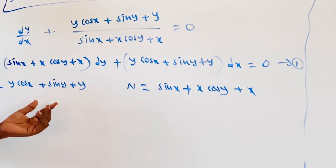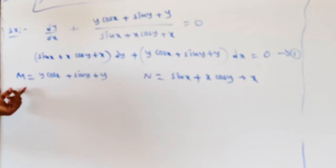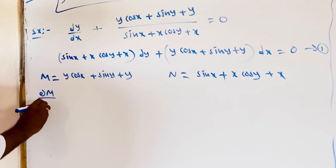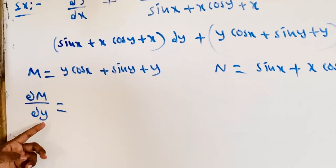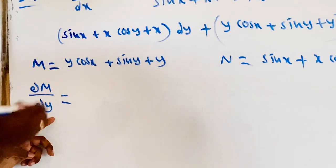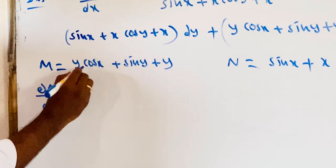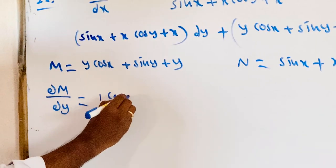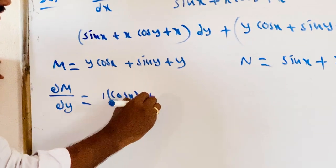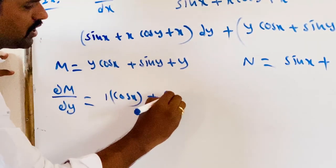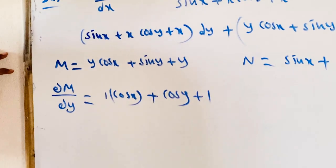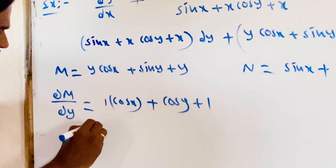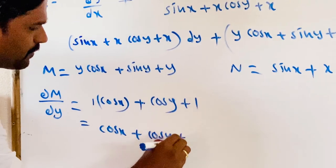Now we find the derivatives with respect to y and x respectively. ∂M/∂y means differentiating M with respect to y, where x is constant. y derivative gives 1, so we keep cos x as is; derivative of sin y is cos y; derivative of y is 1. Therefore ∂M/∂y equals cos x plus cos y plus 1.